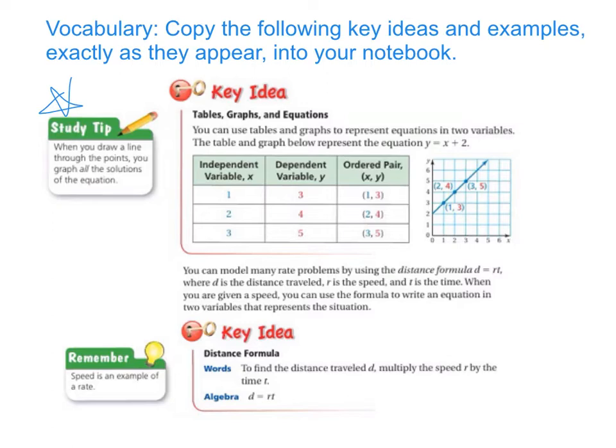The second key idea starts above the box. It says you can model many rate problems by using the distance formula. Distance equals rate times time, where d is the distance traveled, r is the speed, and t is the time. When you are given a speed, you can use the formula to write an equation in two variables that represents the situation.